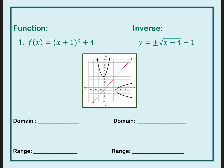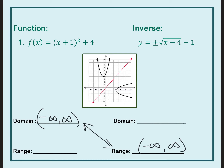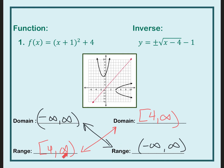The domain of all quadratics is negative infinity to infinity, and inverses switch domains and ranges. So the domain of my function is the range of my inverse. My lowest value is 4, so my range is 4 to infinity. Looking at my inverse, my domain is also 4 to infinity. The domain of your function is the range of the inverse, and the range of your function is the domain of the inverse.